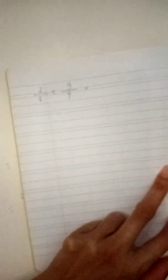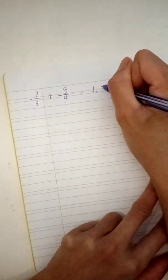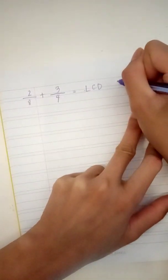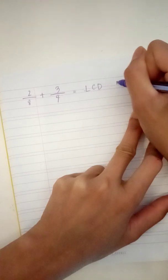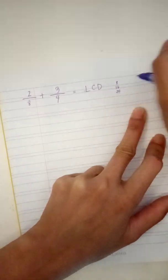Because they don't have common denominator, you have to find the LCD. What is the common denominator of eight? What is the multiples of eight? Eight, sixteen, twenty-four. In four?